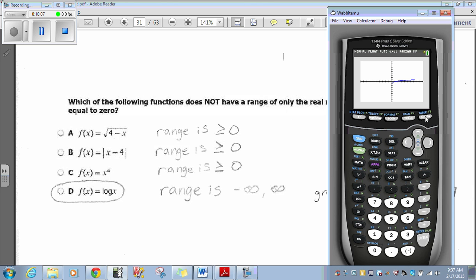Well, look. We do have negative numbers there. Let me just zoom in on that. Zoom right in on that. We get negative numbers with the f of x equals log of x. So, your answer is d. Log of x. Because it does not have a range of only real numbers greater than or equal to 0.